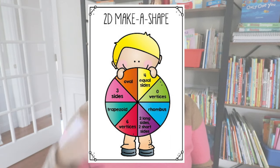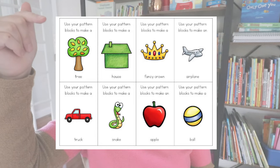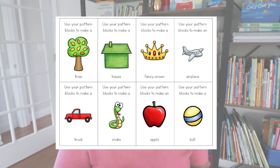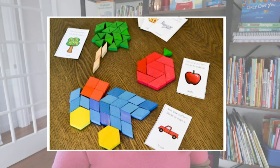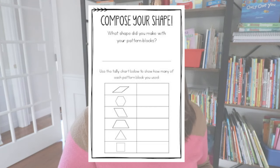I also have a differentiated spinner that instead of showing the shape shows attributes or the shape name — for example, 'four equal sides' means they build a square. Another fun activity uses pattern block cards where students compose imaginative creations like an airplane, house, or crown using pattern blocks. After creating, they fill out a page describing what they made and complete a tally chart showing how many of each pattern block they used.